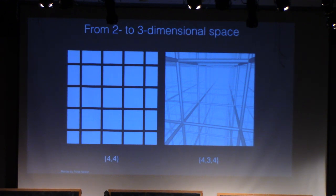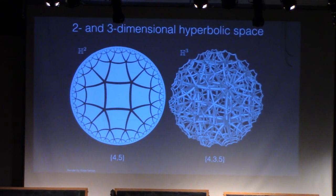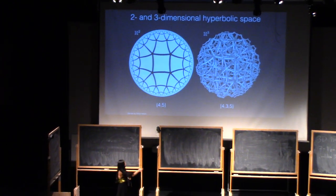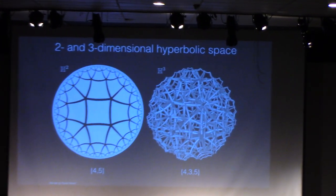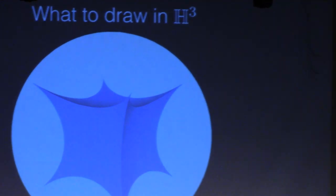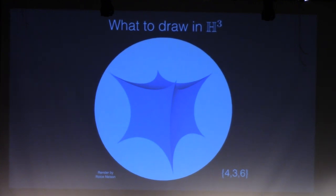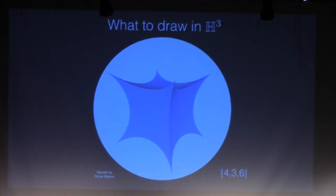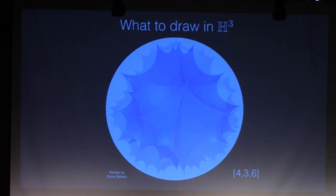In hyperbolic space, we can play around with these numbers again. This is what would happen if you had cubes that meet five around every edge. This is in the Poincaré ball model. We could do this again for cubes that meet six around every edge. This is a cube inside the Poincaré ball model. We're gonna start adding cubes around each of these edges, add the rest of the five around them. Then we're gonna add five around every edge there.